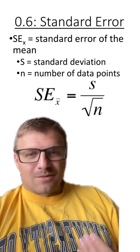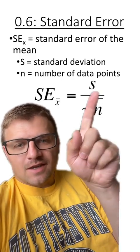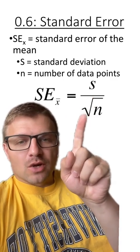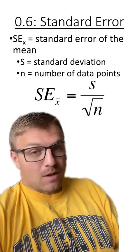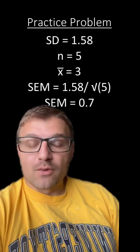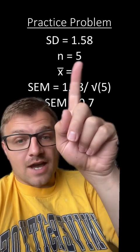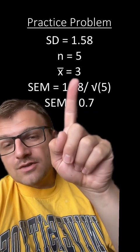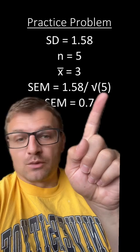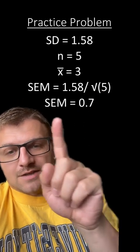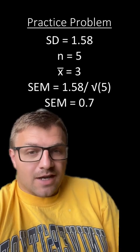Now, the last thing we have to understand with standard error is how to calculate it. To calculate standard error of the mean, all you have to do is take the standard deviation, which we already calculated, and divide it by the square root of n, or the number of data points. Again, this is a lot easier when you actually show a problem. Remember our practice problem from before? We had data points 1, 2, 3, 4, 5. Our standard deviation was 1.58. The number of data points is 5, and our average was 3. So all we have to do is plug in numbers. We take the standard deviation and divide it by the square root of n, which is 5. And if we plug those numbers in, we're going to calculate that the standard error of the mean is 0.7. And yes, it's that easy. It's just plugging in two numbers and figuring out the standard error.